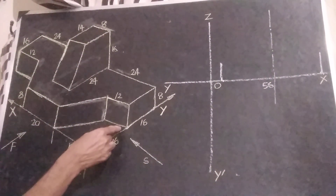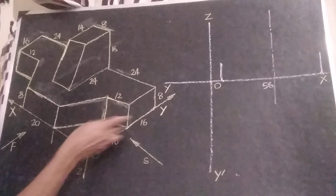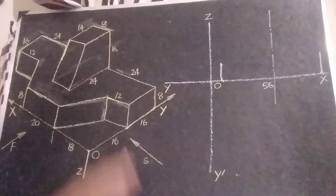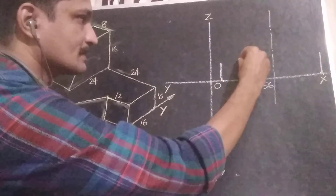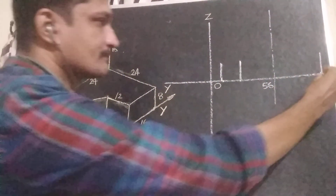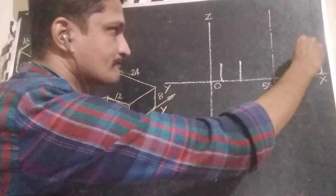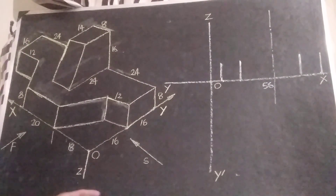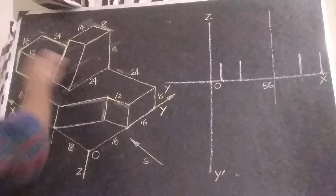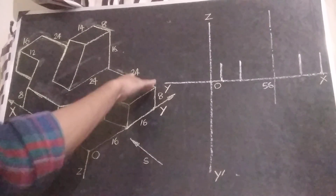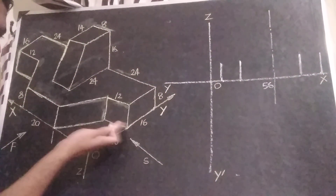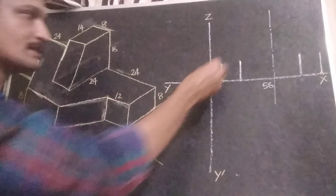That vertical edge is at a distance of 12 mm away from the outermost edge, so we can represent that edge here and here also. Then we can draw this surface, which is 8 units above the ground plane.